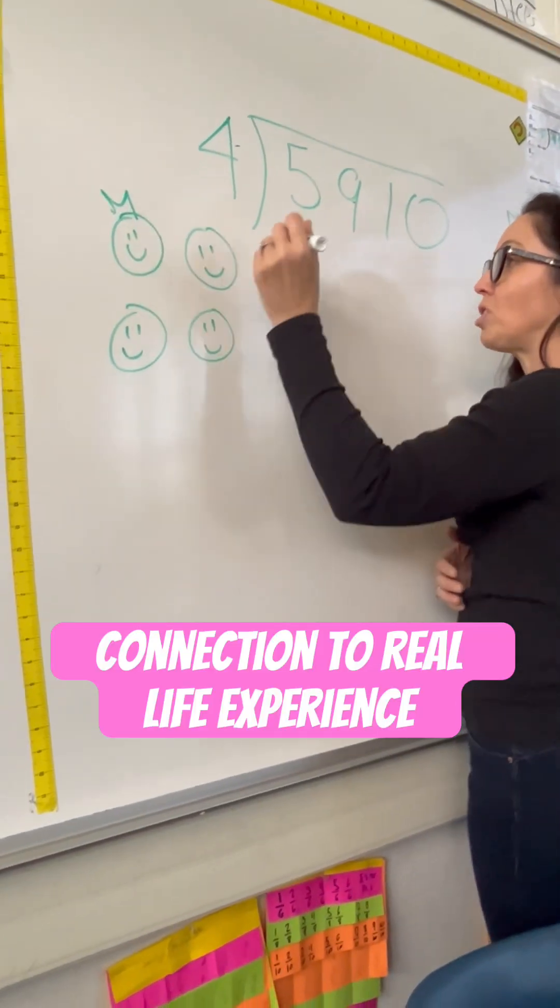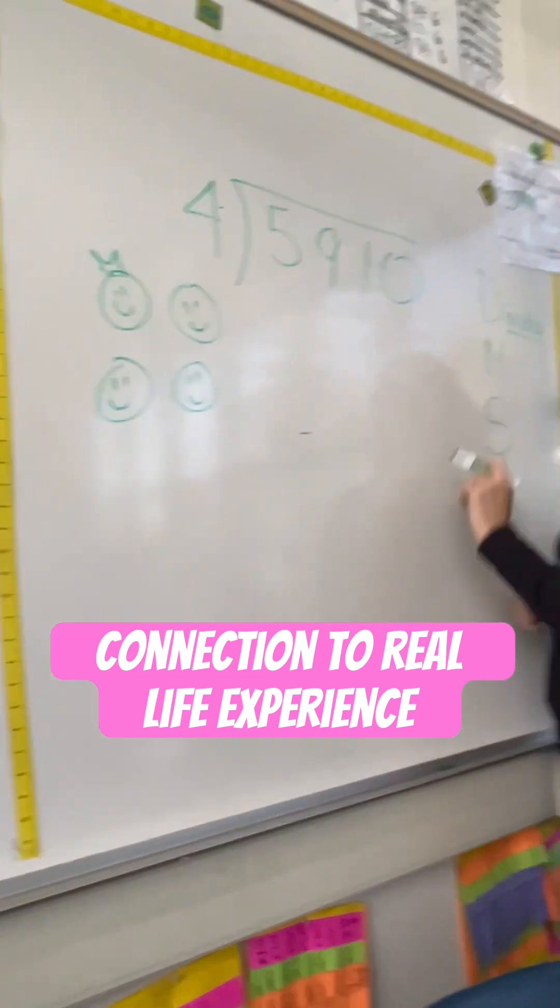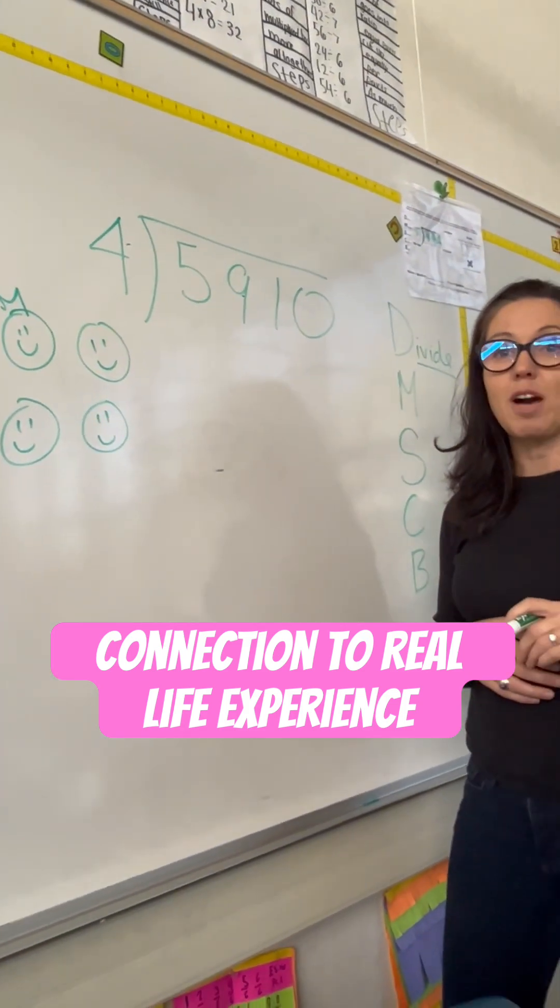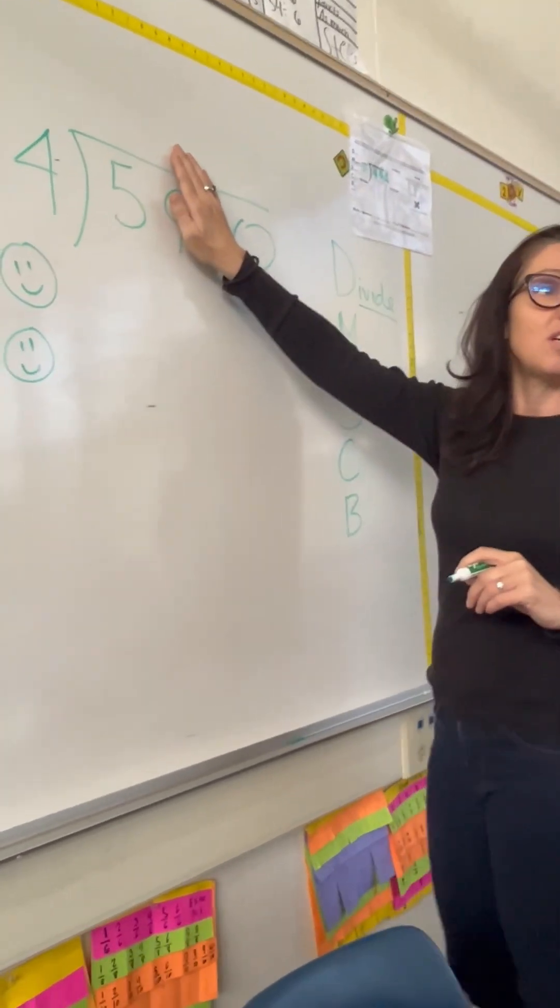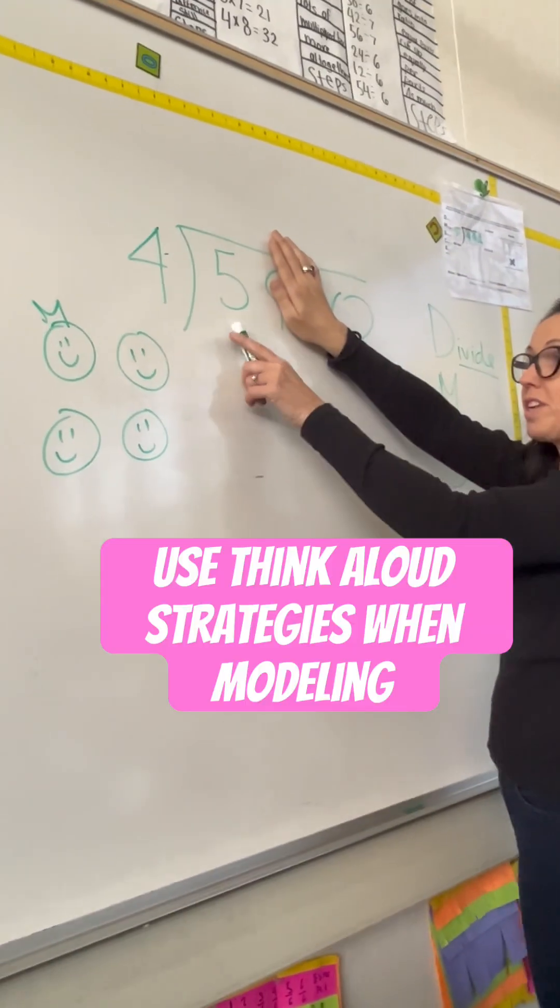We're going to all share some chicles, okay? We're going to go digit by digit, see how many chicles we can share with our friends. So, friends, the first digit is what, everyone? 5.